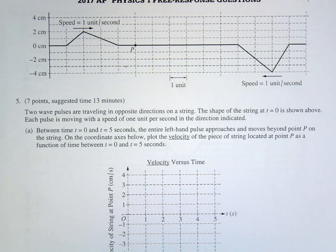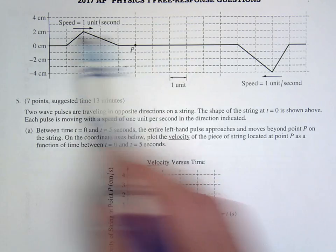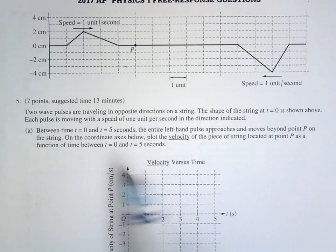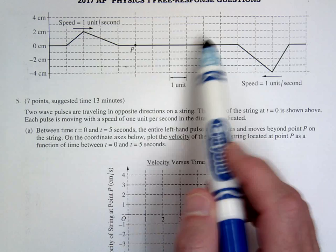This is the 2017 AP Physics 1 FRQ question number 5. So the first question is asking, we have these two waves moving this way, and actually in the first question we're just dealing with this wave moving to the right.